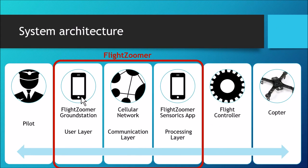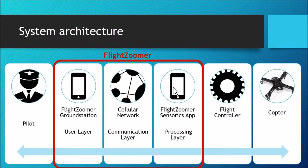So how does the system architecture look? First, there is a ground station with a touchscreen that gives the pilot comprehensive control over the flight path of the drone. Second, we have an onboard smartphone which provides the processing layer and works as a companion computer.